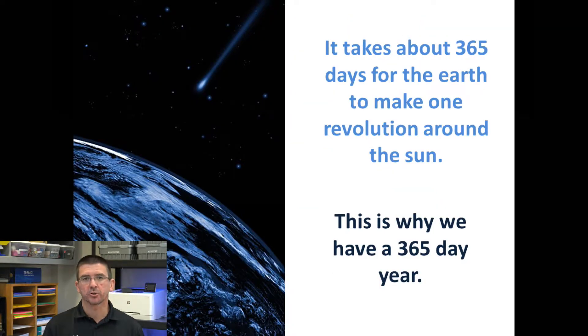And these revolutions take about 365 days each, and that's why we have a 365-day year, because one year is the amount of time it takes Earth to travel around the Sun one time.